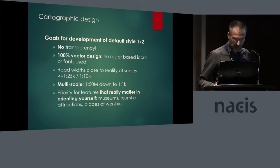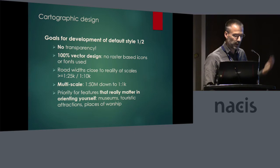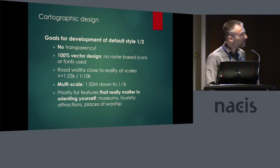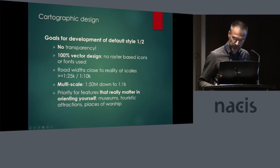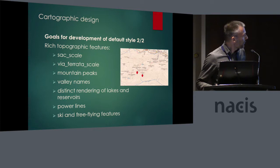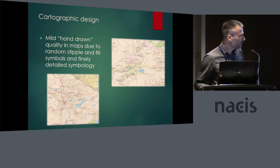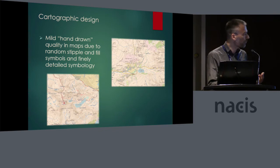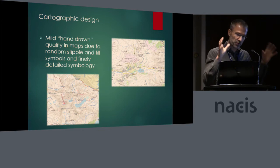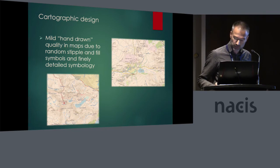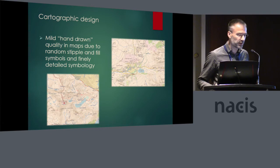About the cartographic design, there are a few extra points. There is no transparency being used — it's a 100% vector design. Road widths are close to reality in my style, though it's completely adjustable because the toolbox is flexible. Topographic features are included, and I've really tried to strive for a kind of hand-drawn quality in the maps. One way I achieved this was multi-layered symbols where part of the symbol — for example the polygon fill — is based on a random stipple, so it looks more natural. I combine that with more regular-shaped symbolization, resulting in a more natural feeling that you really need to see on the maps themselves.